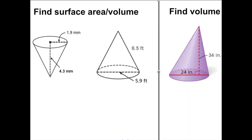Hopefully you had a chance to watch the video of me breaking down how to find the surface area of a cone by the dissection argument. Now I'd like you to find the surface area and volume of the two cones on the left, and only the volume of the cone on the right. Please round all answers to two decimal places. Pause the video, find the requested information, then unpause to see what I got.